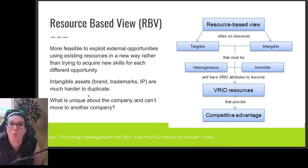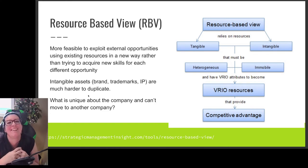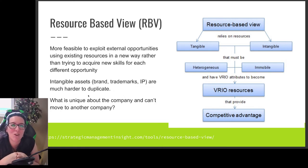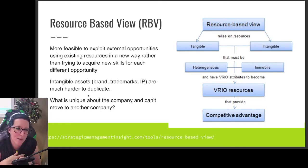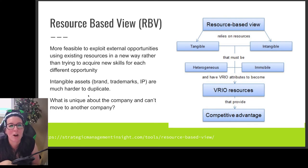When we look at our resources, we have tangible resources and intangible resources. Tangible things you can touch — equipment, raw materials. Intangible things you can't touch — our brand, our reputation, trademarks, and intellectual property such as knowledge of how to make things. To give us a sustainable competitive advantage, we need resources that are heterogeneous and immobile.